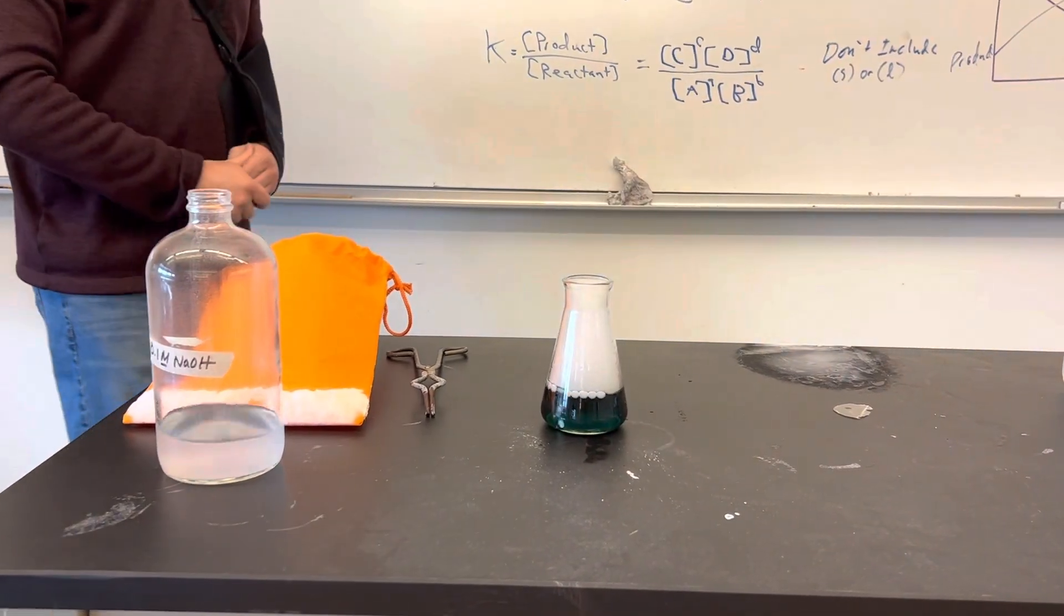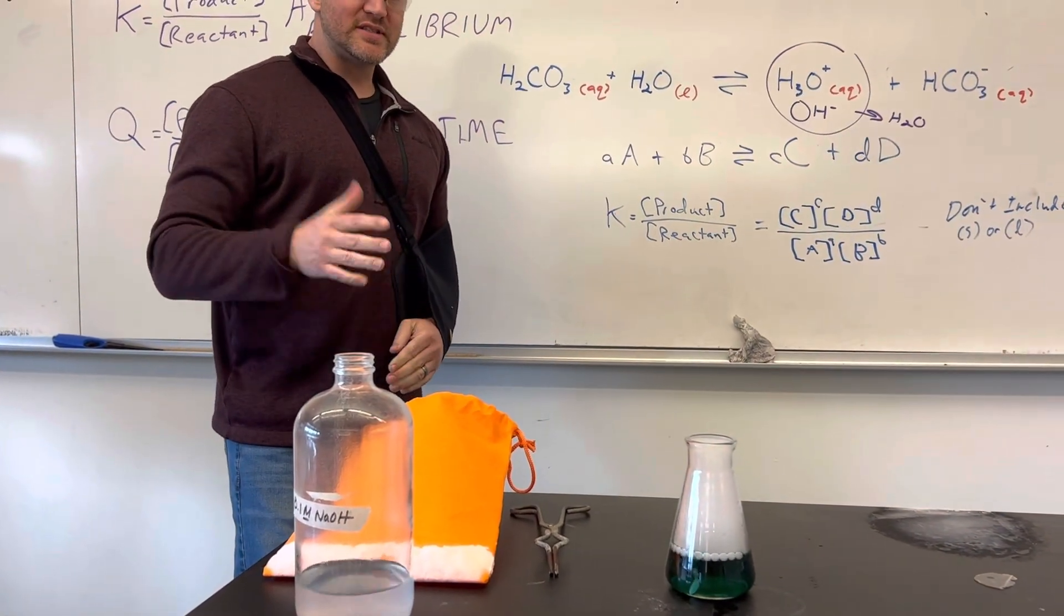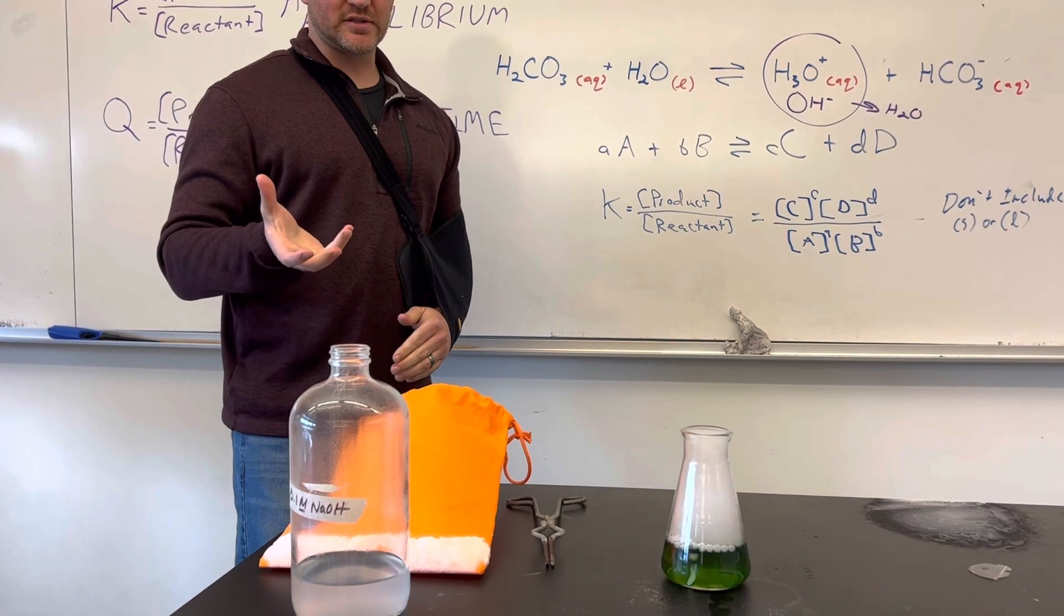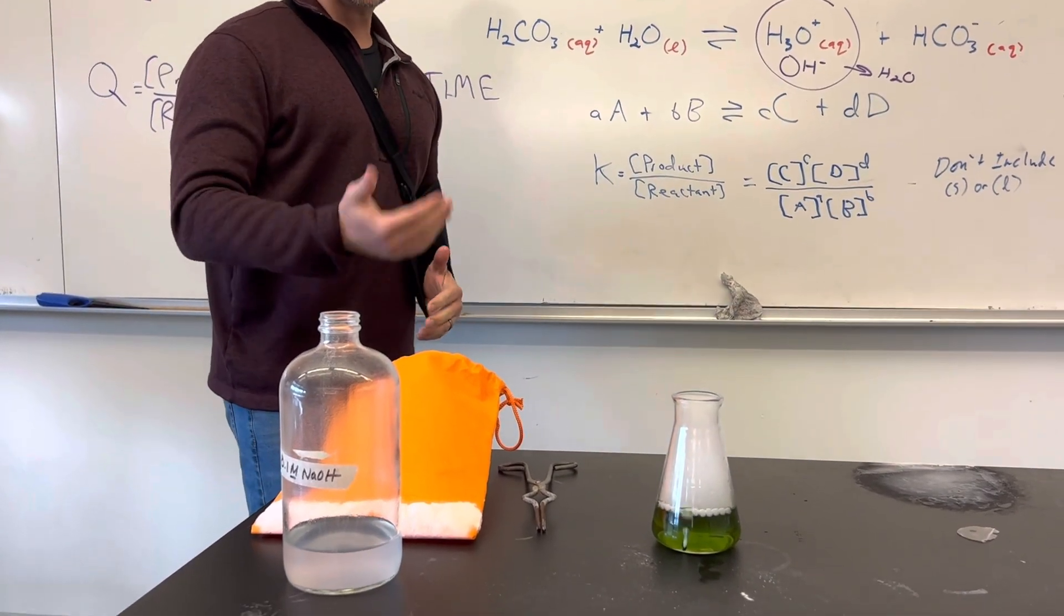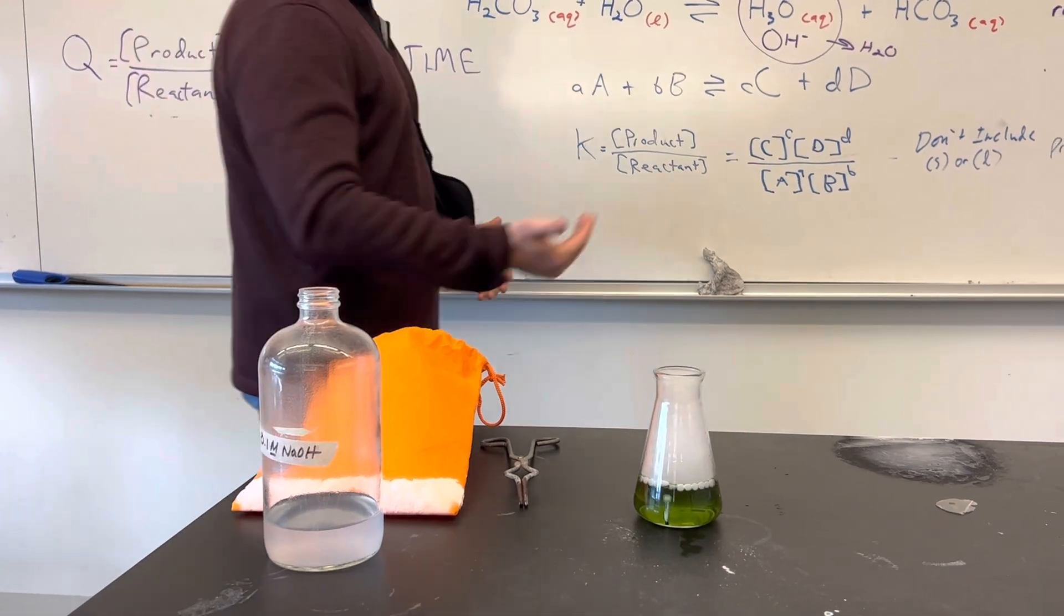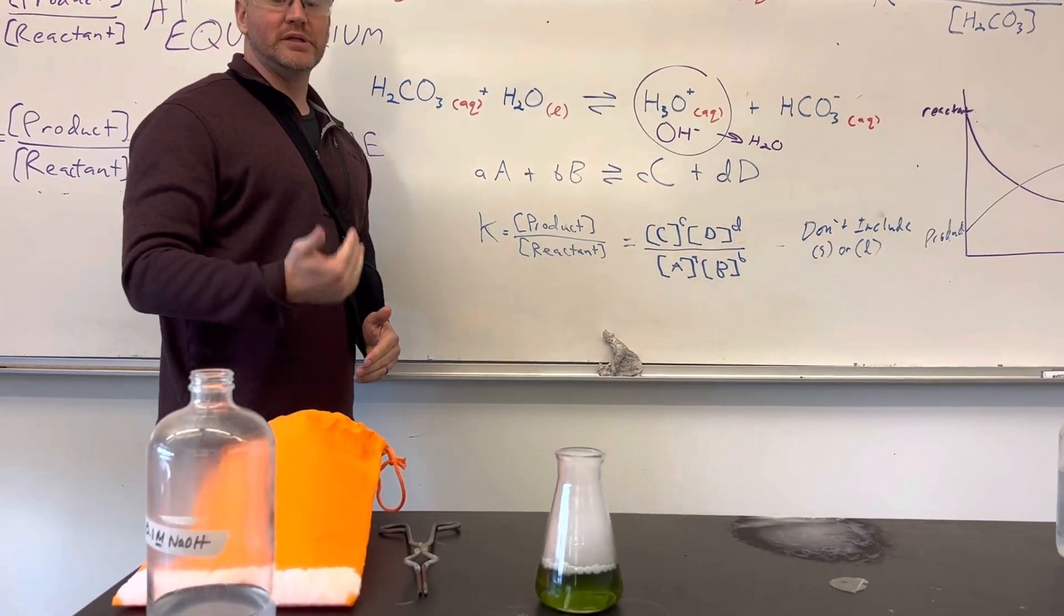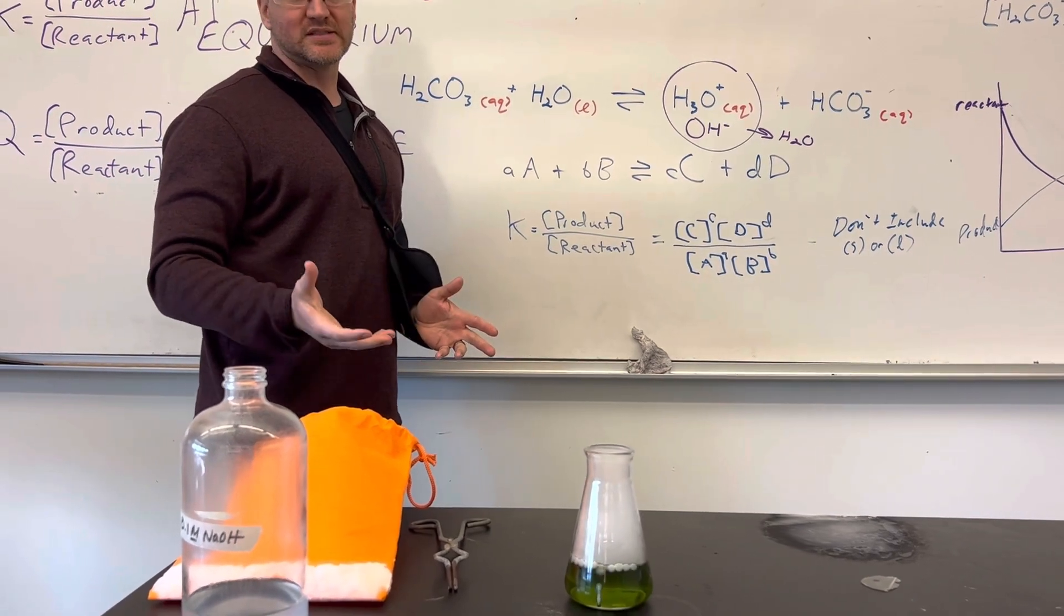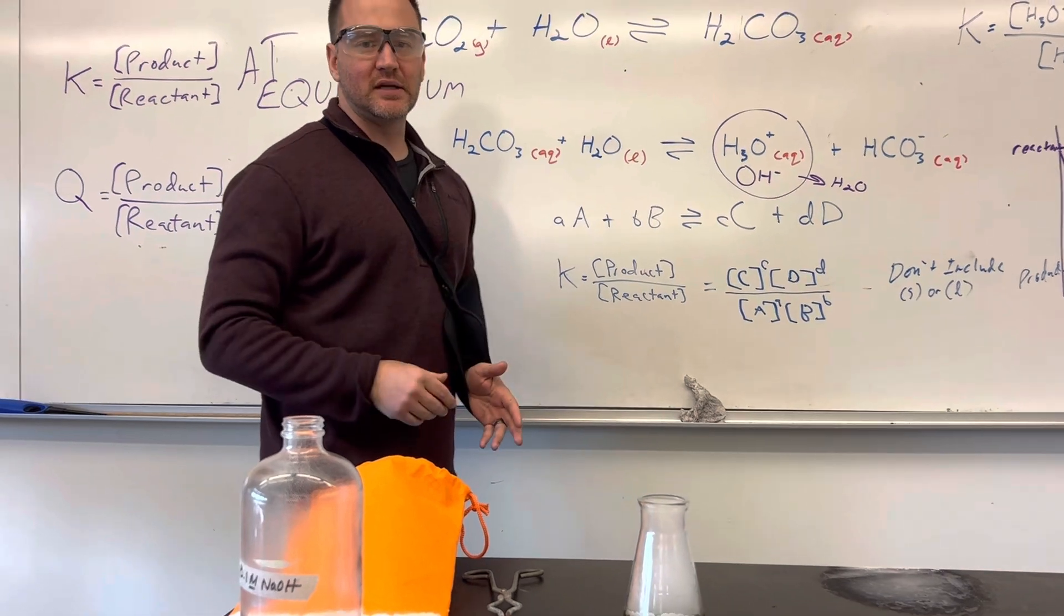At first it turns darker like it would in a basic solution, but relatively quickly, if you look at it, you're gonna see that the system—because there's still carbon dioxide available—is gonna work its way back to equilibrium. So temporarily that ratio of products, which includes the hydronium ion, is lower than it should be at equilibrium. So Q would be less than K, and you can see that it worked its way back to that same point.